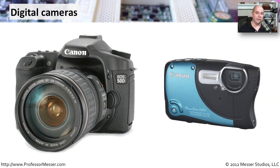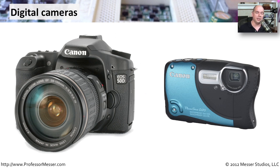Although we're taking a lot of our pictures these days on our smartphones, we still have standalone digital cameras that can be used as multimedia inputs into our computer. It might be one of these higher-end digital SLR type systems, which have very advanced optics and the ability to swap out lenses. Or it might be an all-in-one device like this. Usually, these are saving to some type of storage device — compact flash or secure digital flash card — that you can take out of the camera and plug into your computer.